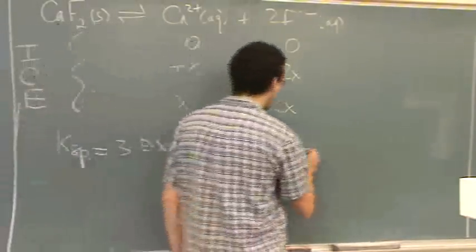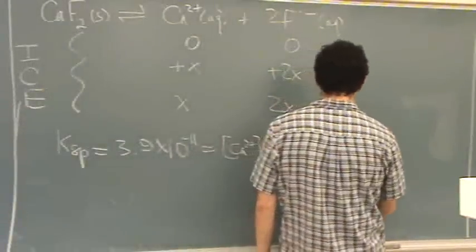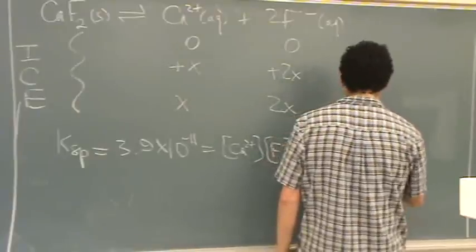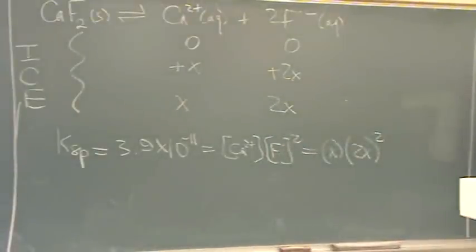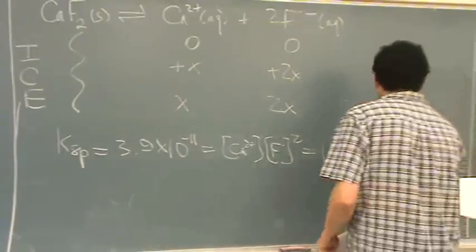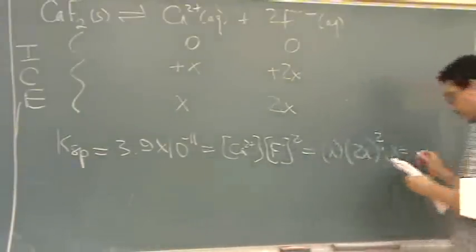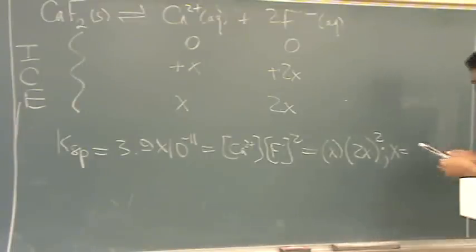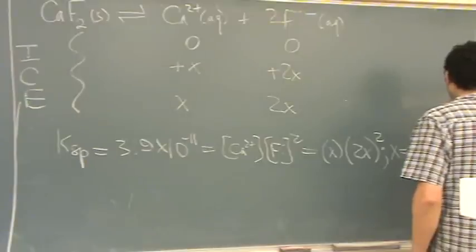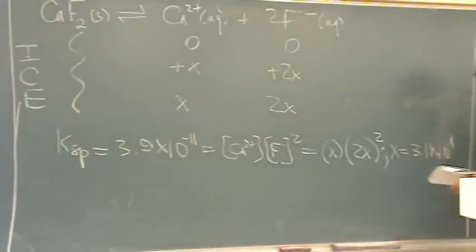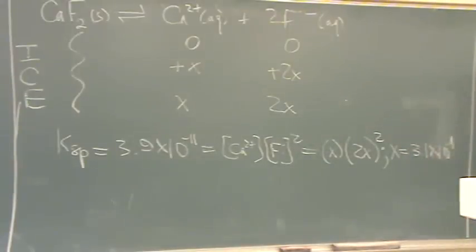So, plug in. That's x for calcium, 2x for fluoride. Square that. And, you solve for x. So, solve for x. x is going to equal 3.1 times 10 to the minus 4. Oh, I forgot one factor. So, that's how you would do it normally.